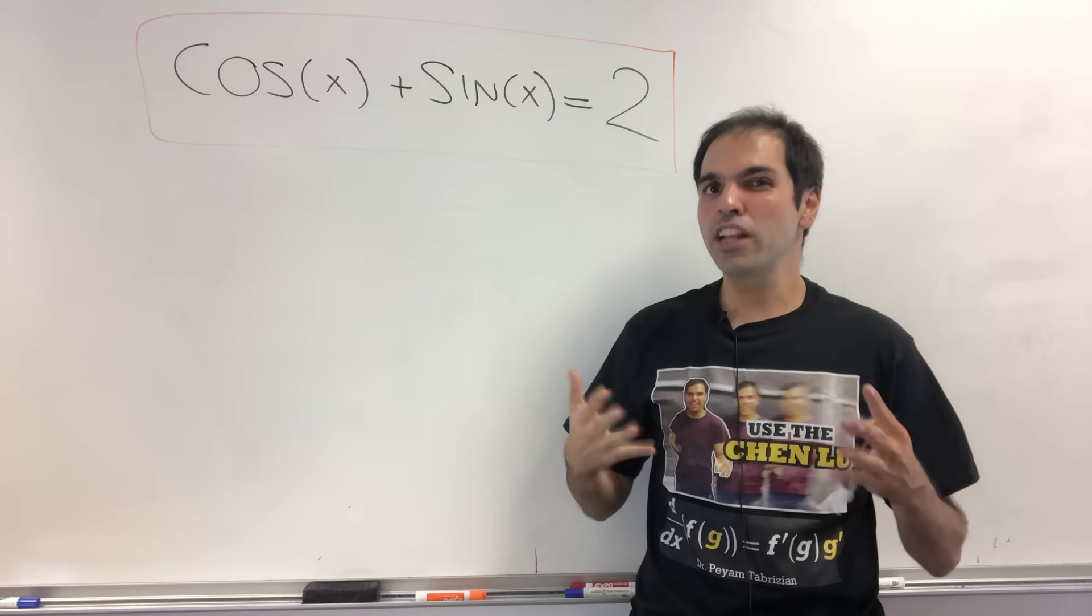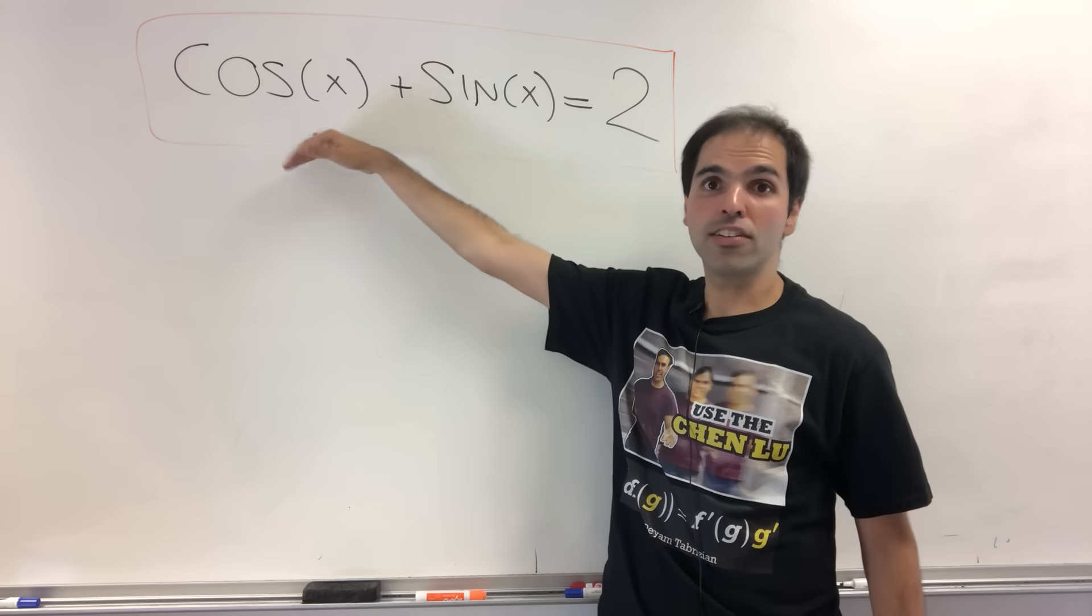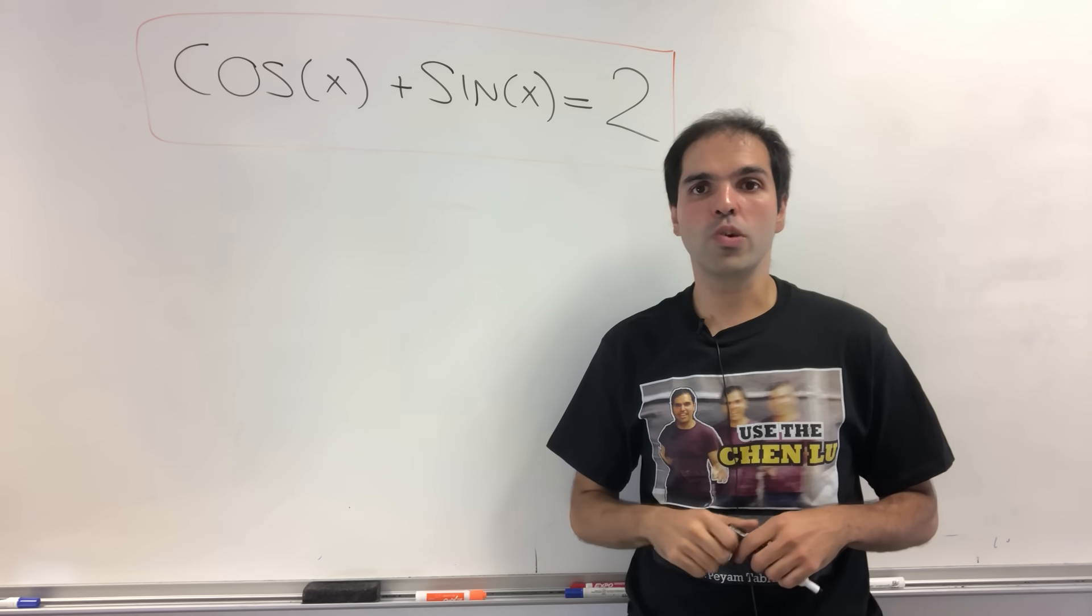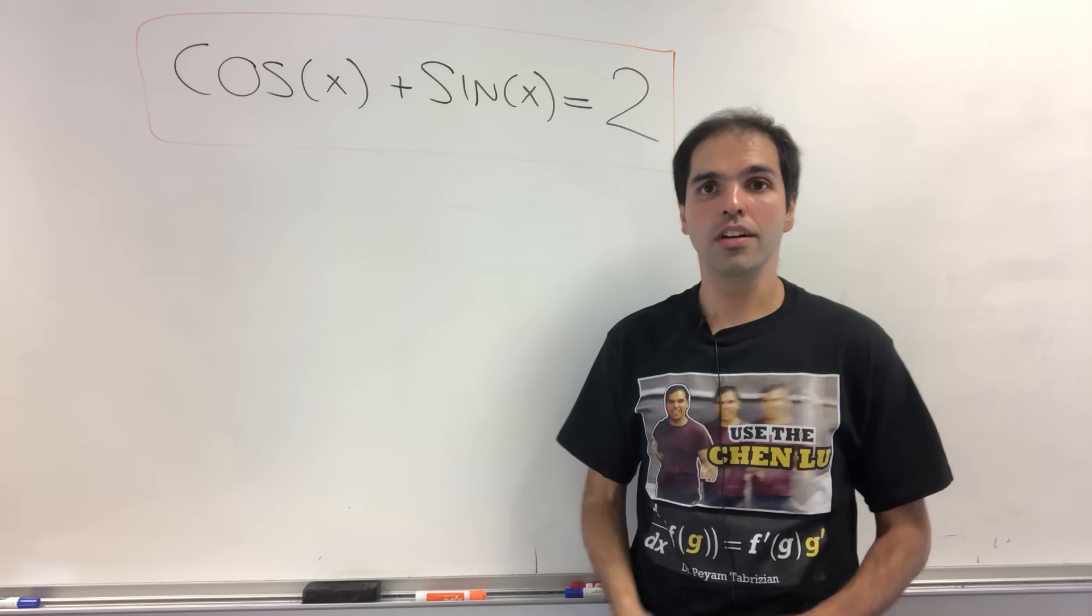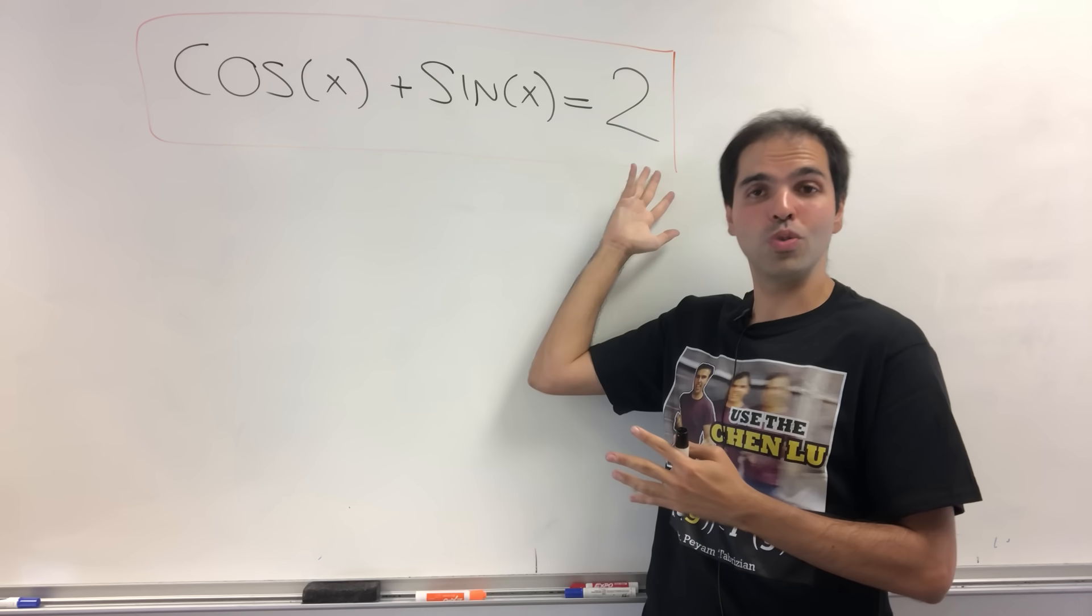And you're probably like, wait a moment, I thought cosine plus sine is between minus √2 and √2. So how can it possibly equal 2?